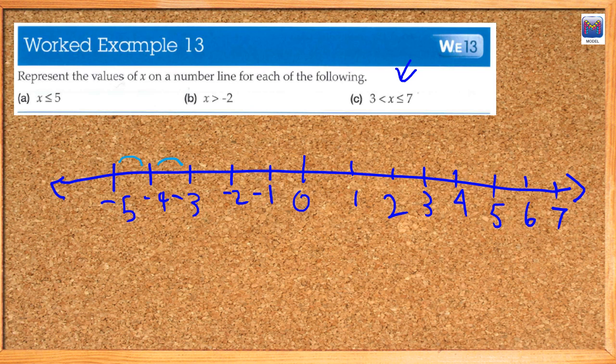Okay, so for x is less than or equal to 5, we represent that as a solid circle and then a line going down. And you can keep doing that as far as you feel comfortable. So that's A.